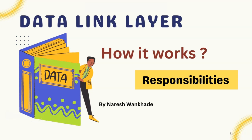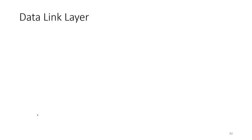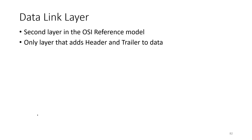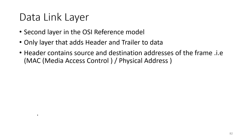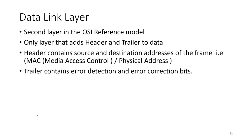In this video lecture we will see the working of the data link layer with its responsibilities and services. The data link layer is the second layer in the OSI reference model. It is the only layer that adds a header (H2) and trailer (T2) to the data. The header contains source and destination addresses of the frame, where MAC stands for media access control, also known as physical address, and the trailer contains error detection and correction bits.